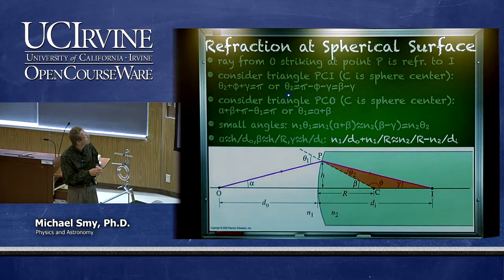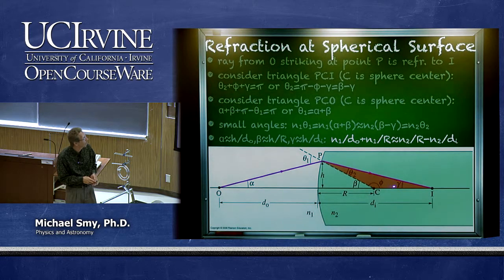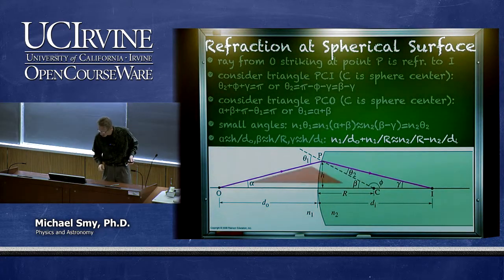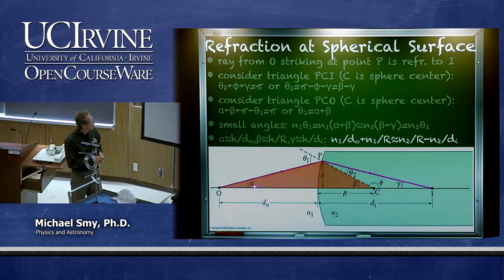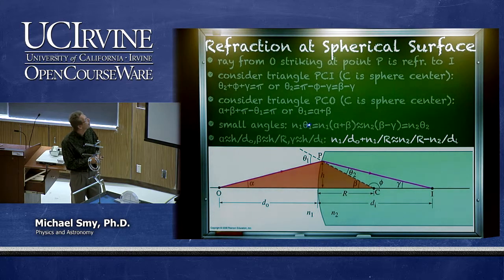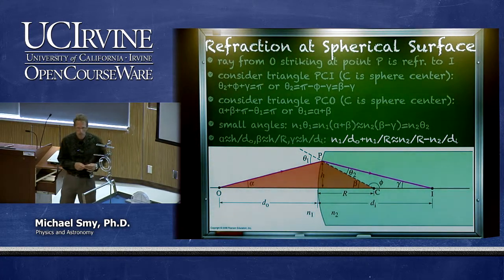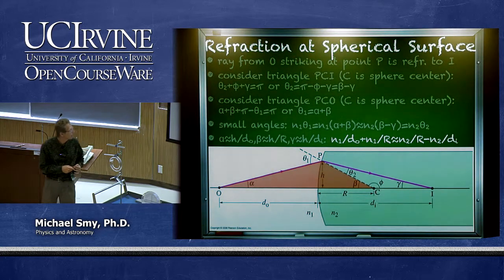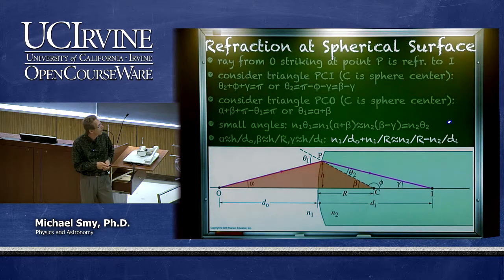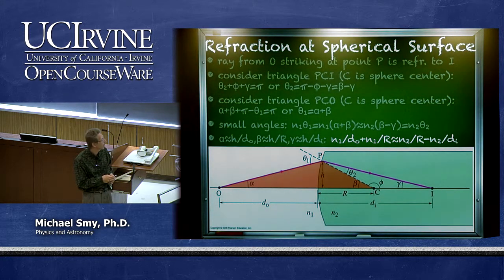We've now expressed theta_2 as a function of beta — the direction of the normal — and gamma — the direction of the refracted ray. Similarly, for the angle at point O, we get theta_1 equals alpha plus beta. Making the small angle approximation, where sine and tangent of an angle equal the angle itself, Snell's law becomes n_1 times theta_1 approximately equals n_2 times theta_2.